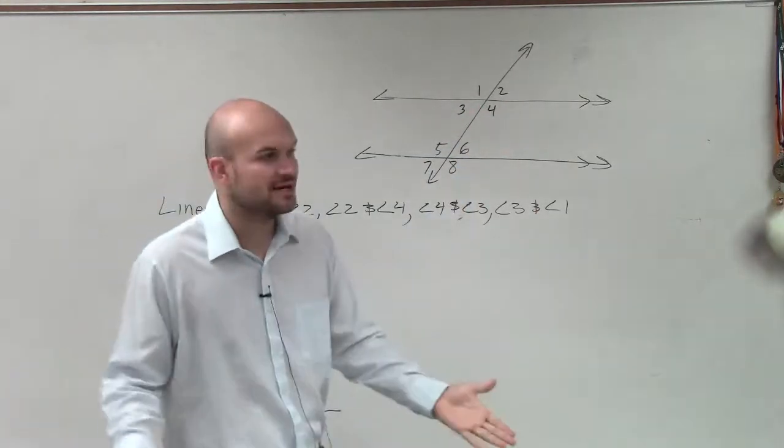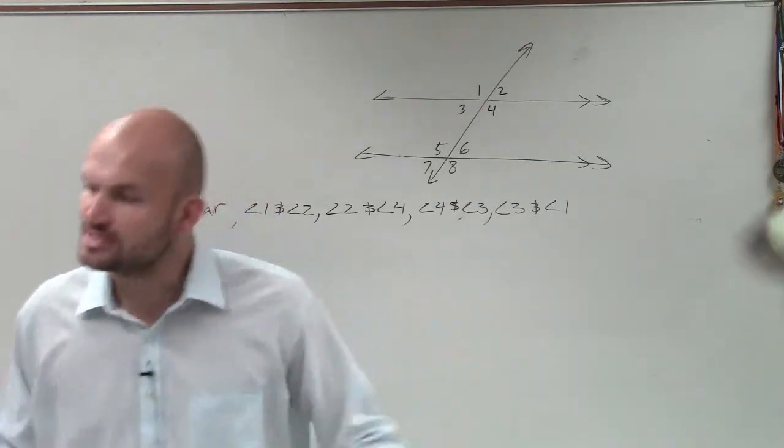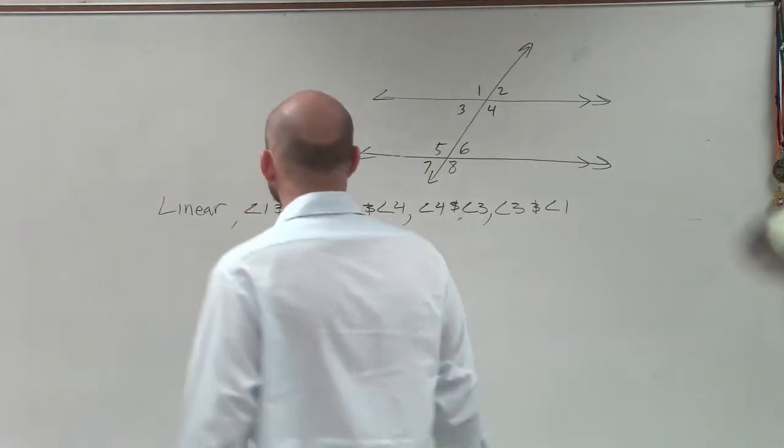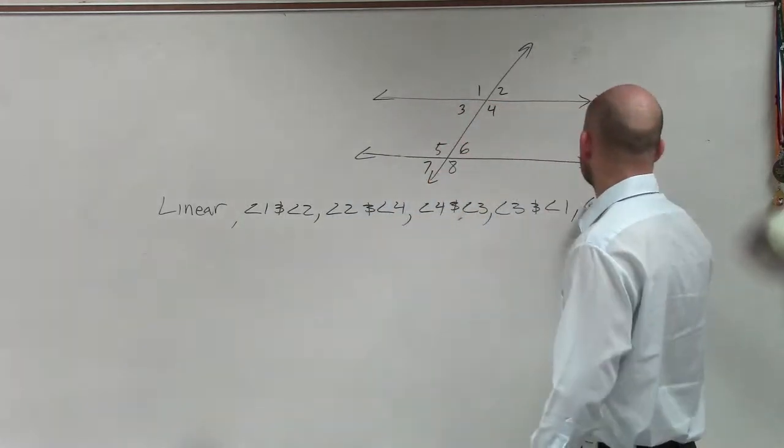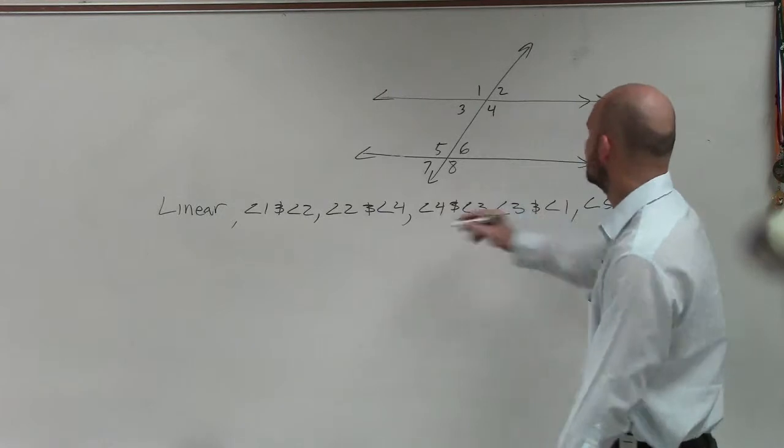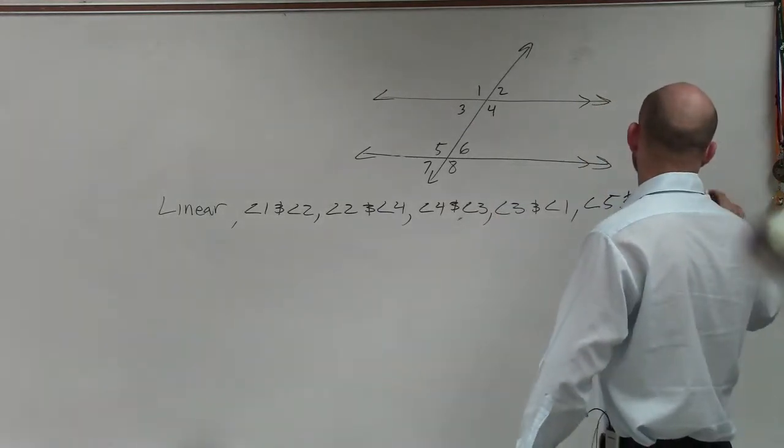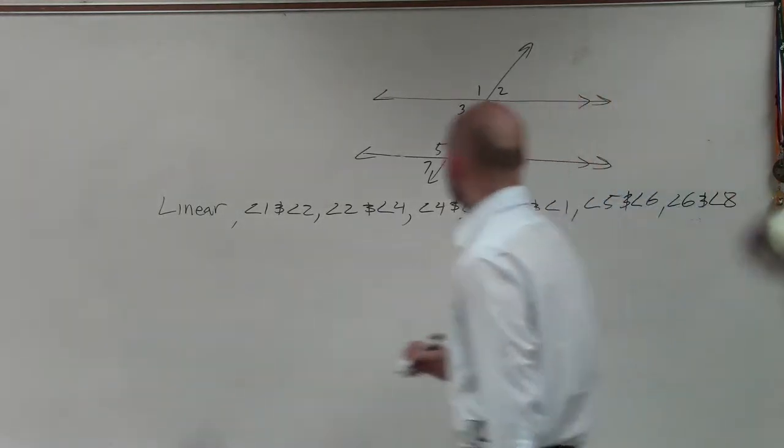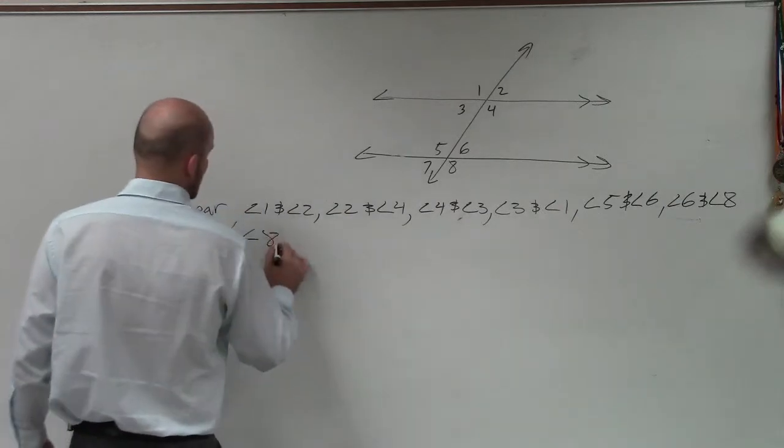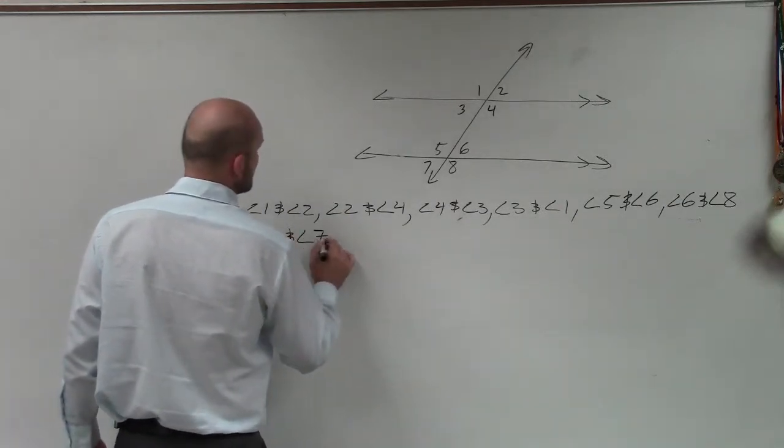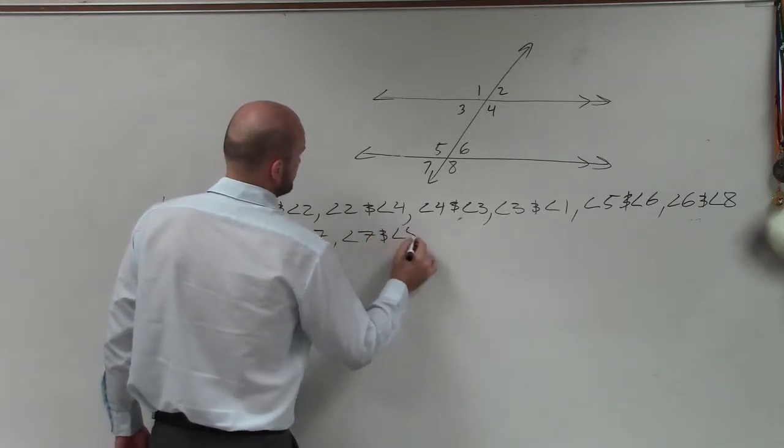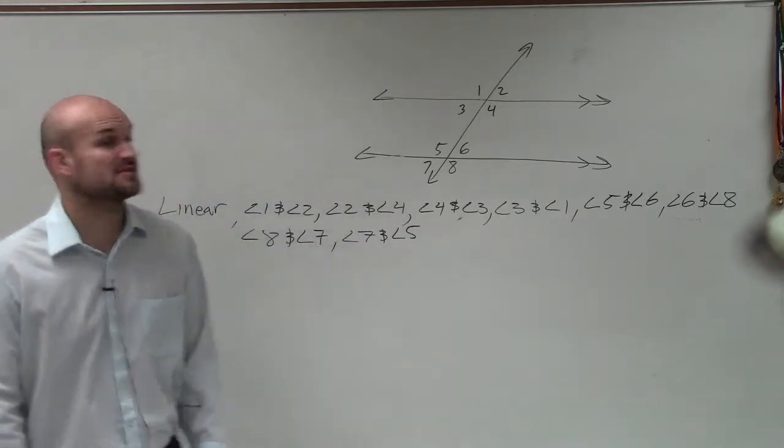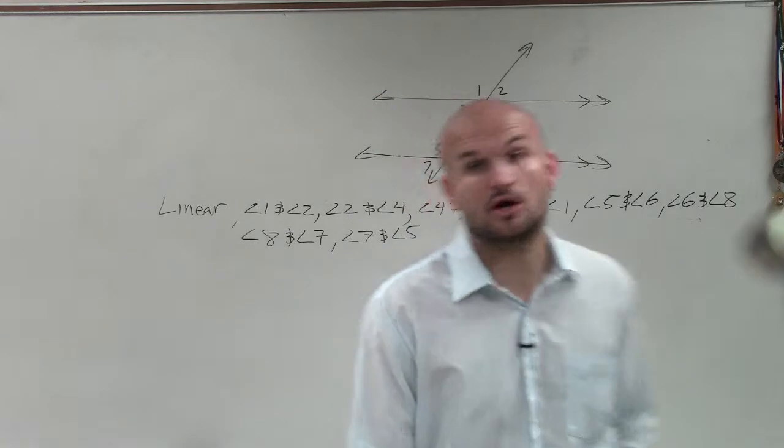And remember, linear pairs, since they make up a straight line, are what we call supplementary. They add up to 180. Then to continue, we could also say angle five and angle six. We could say angle six and angle eight. We could say angle eight and angle seven. And you could say angle seven and angle five. So there's a lot of linear pairs. Should have taken you a long time.